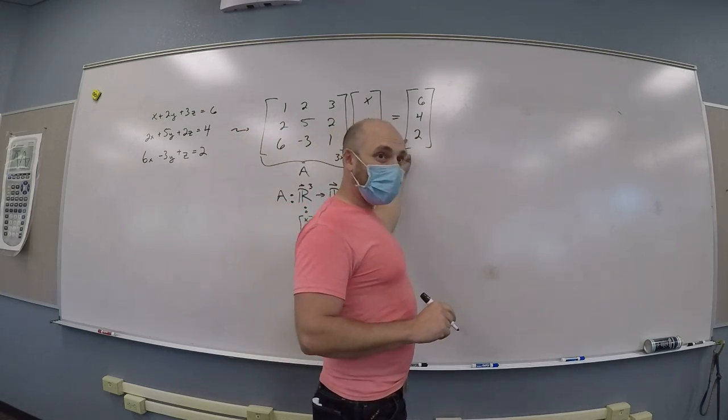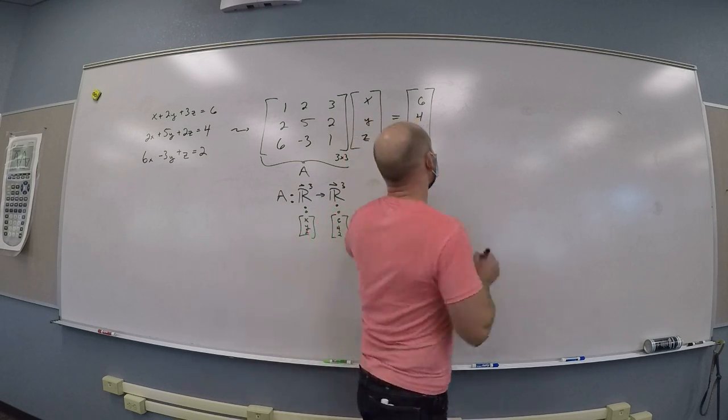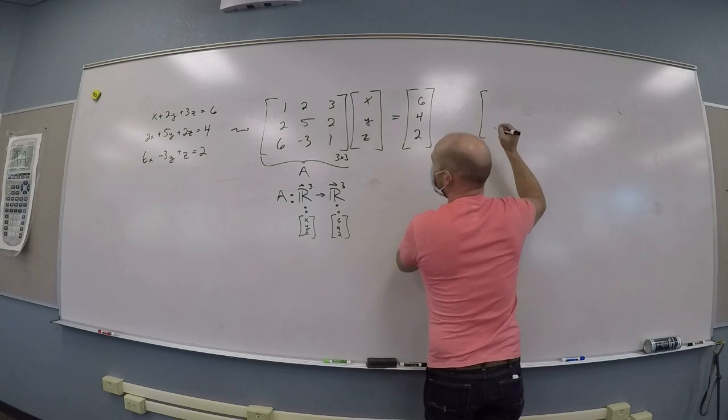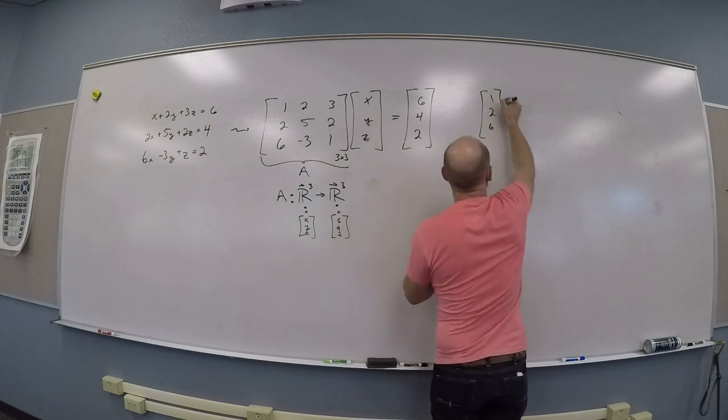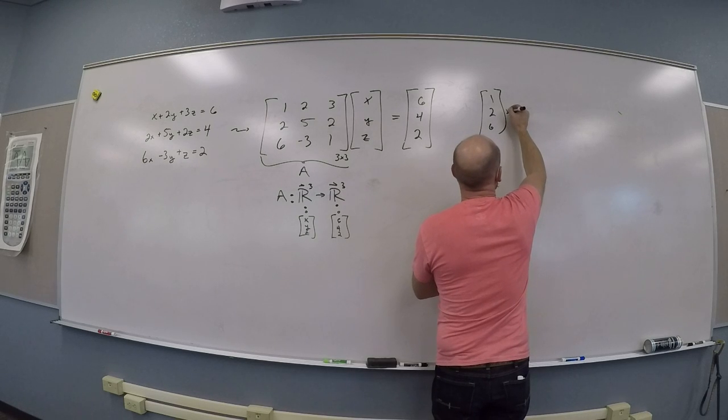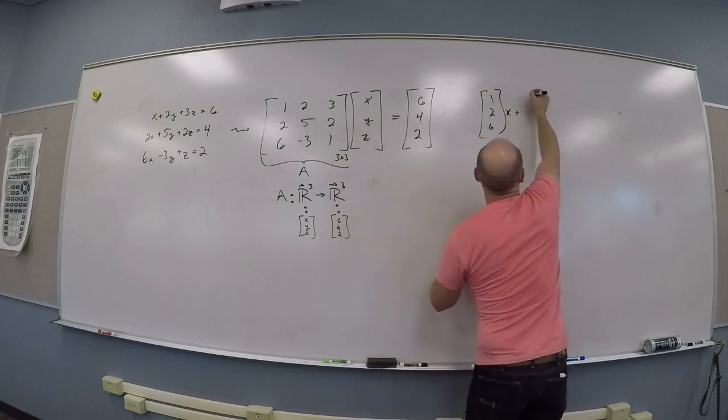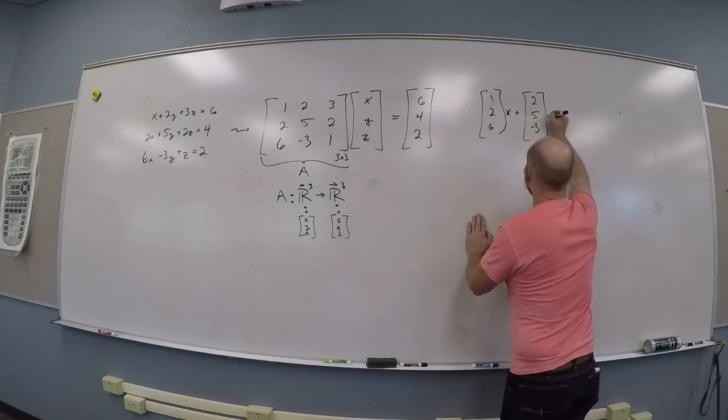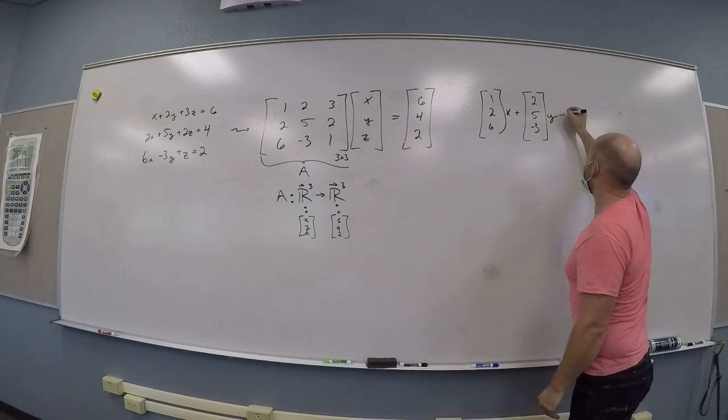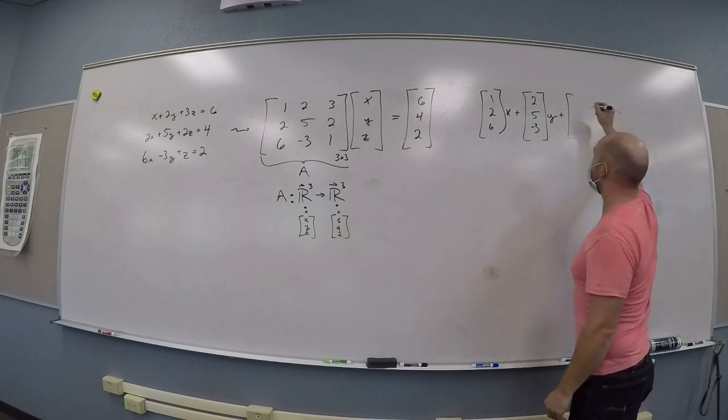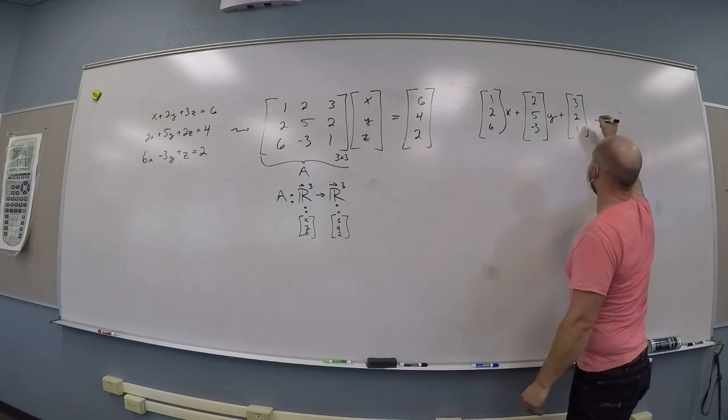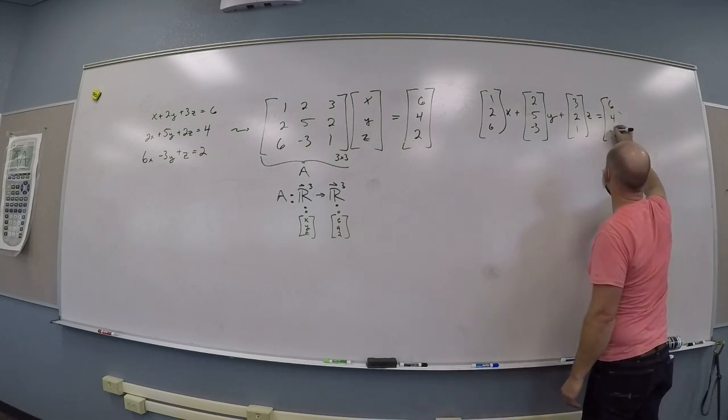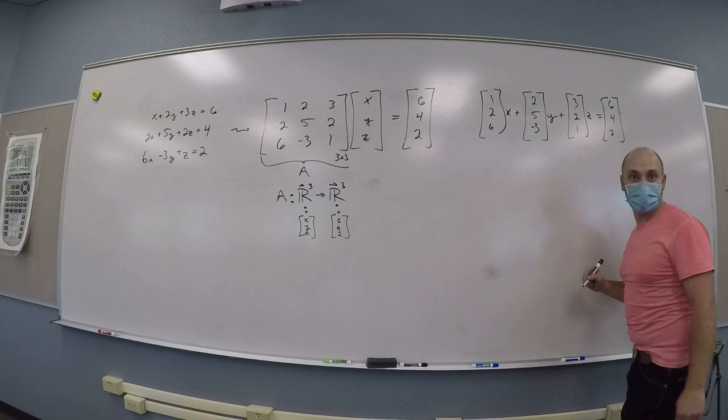So, now, if I think about the column multiplication picture, right? I can consider this multiplication to be the first column, 1, 2, 6, times what? X. Good. Weighted by a scalar X. X. I can add to that the second column. 2, 5, negative 3. 2, 5, negative 3. Weighted by a scalar Y. Added to the vector 3, 2, 1. Weighted by a scalar Z. 3, and this is supposed to equal the vector 6, 4, 2. Oh, I just got it. Are you kidding me?